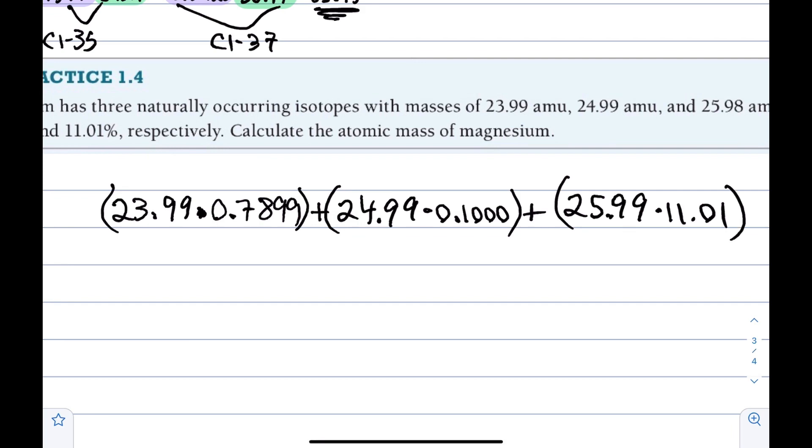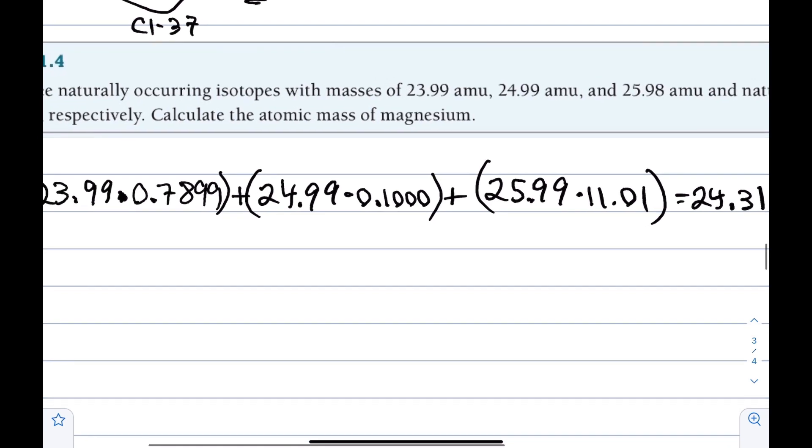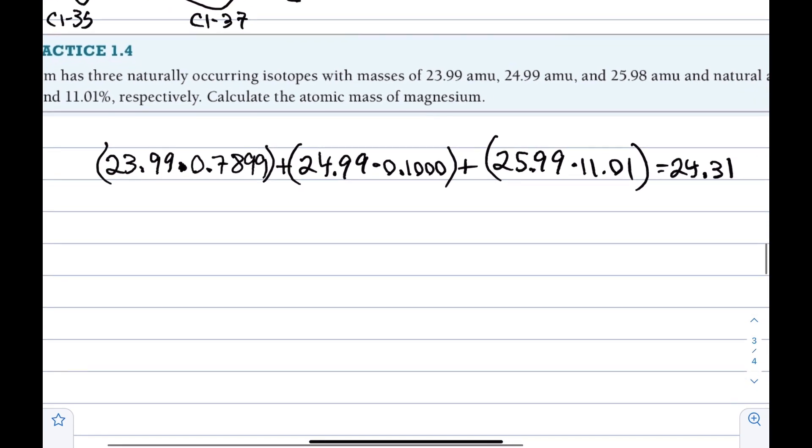So, if you pop this into your calculator, you're going to get something along the lines of 24.31. And that is the atomic mass of magnesium that checks out.